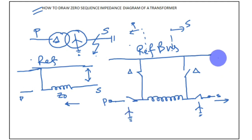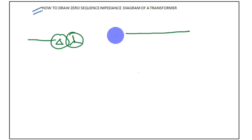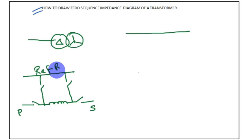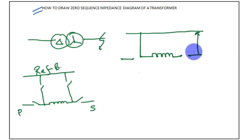Now consider a delta-star transformer where the secondary star neutral is not grounded. The primary is delta, so the primary switch is closed. However, since the neutral is unearthed, there is a discontinuation in the circuit on the secondary side. If an earth fault occurs at the secondary terminal, there will not be any current flowing because of the open circuit. An ungrounded neutral will not detect the earth fault.